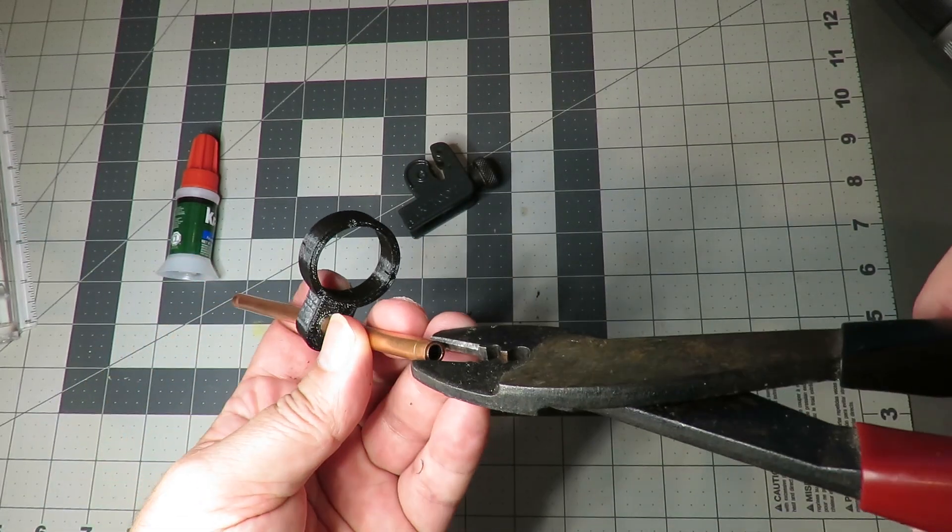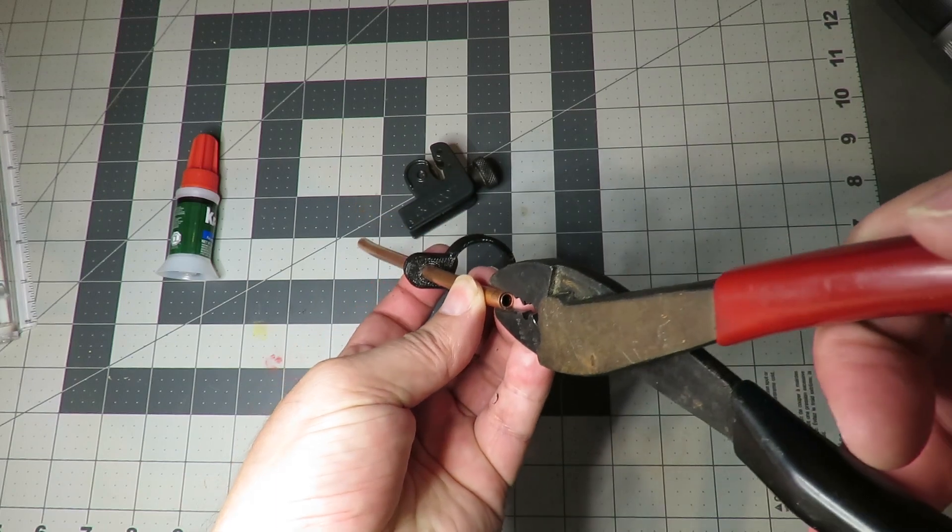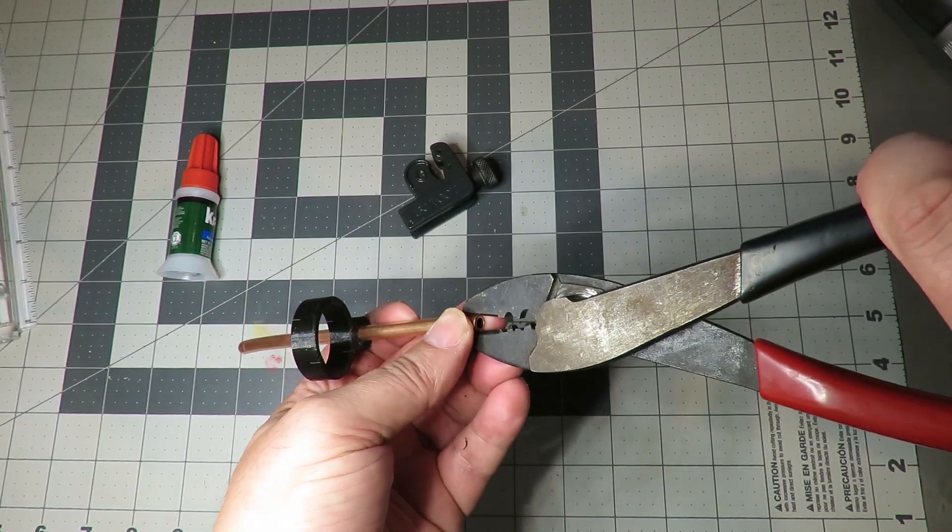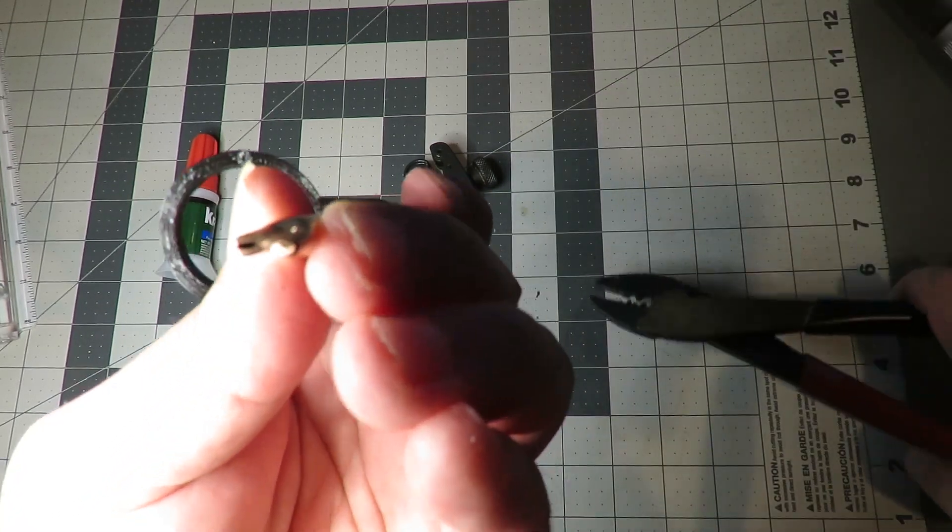Take the crimpers and crimp the tubing to form the nozzle tip. I block off one of the air holes so that all of the air exits the other hole. You can verify this by blowing lightly into the tubing and feel the air coming out.